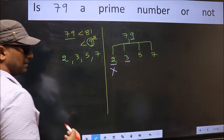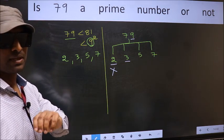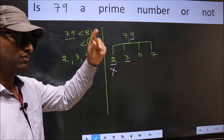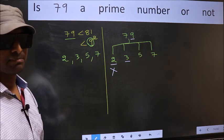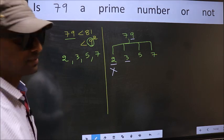To check divisibility by 3, we should add the digits. What I mean is, 7 plus 9. We get 16, and 16 is not divisible by 3. So this number is also not divisible by 3.